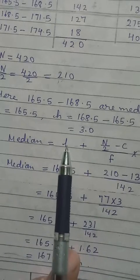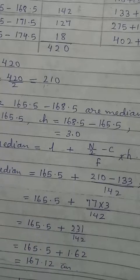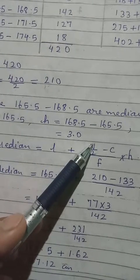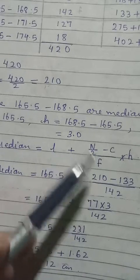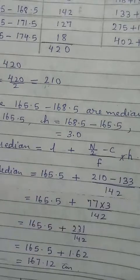So now we can apply the formula. Don't forget to write median equal L plus N by 2 minus C by F into H. L is lower limit of the median class. And the total frequency, C the cumulative before the median class, F frequency of the median class, H is the class size.